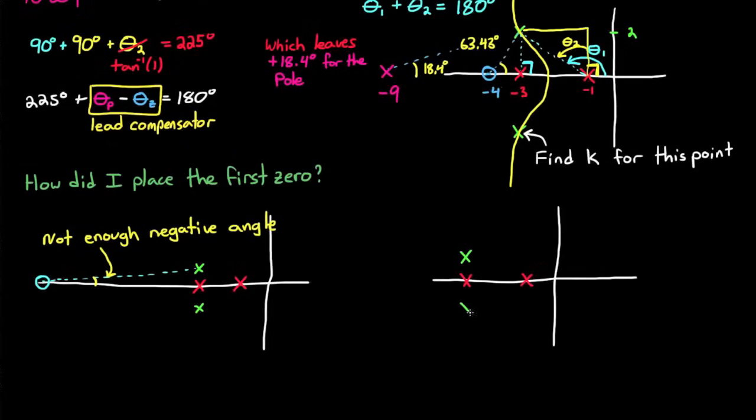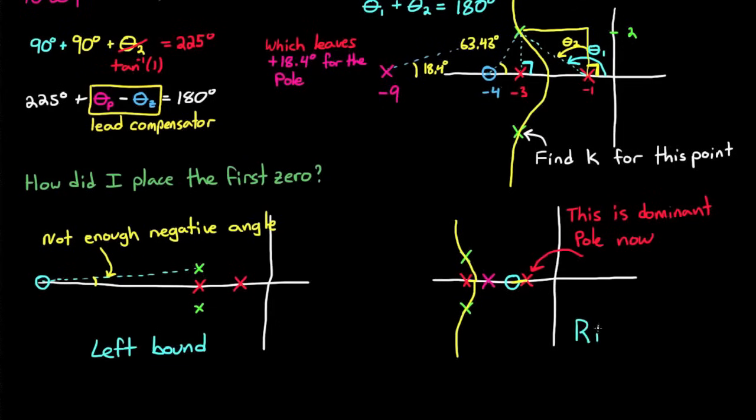If you do that, you're bringing the closed loop pole in the compensator along with it, and then you've messed up your dominant pole. So in this case, you have two poles exactly where you want them to be, but you also have this third pole that's closer to the imaginary axis, and that acts as your dominant pole so the system isn't going to behave the way that you predicted it to. So we have a leftmost bound where you need a certain amount of negative angle, and you have a rightmost bound where you don't want your compensator interfering with your dominant pole.